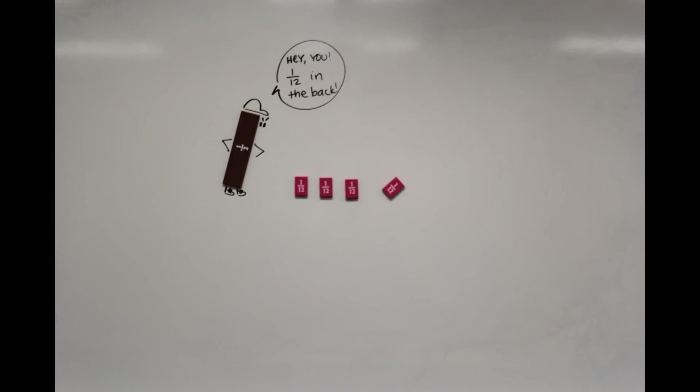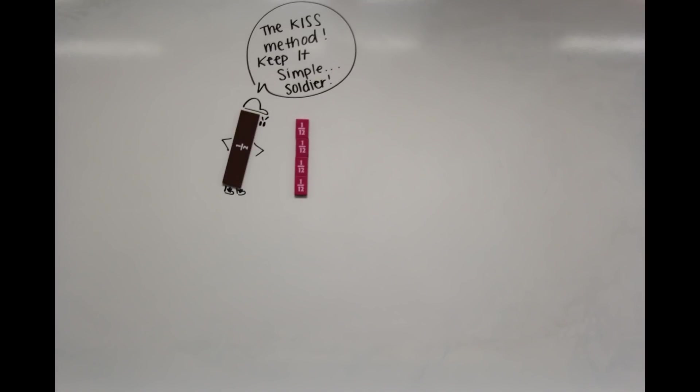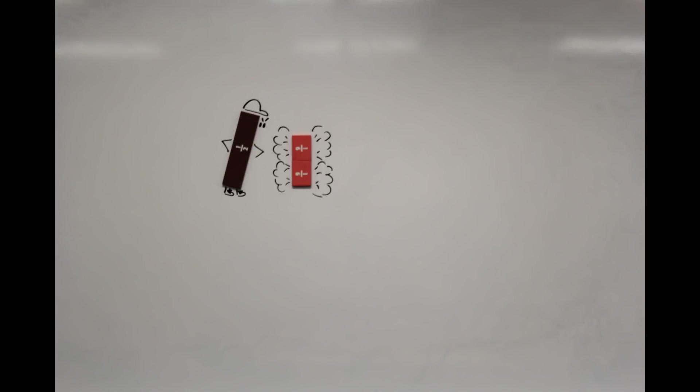Straighten up that line! Hey you 112th in the back, get back here, make a tower. Use the KISS method - don't what, the KISS method? Keep it simple soldier. Not simple enough. That's better, remember keep it simple soldier, now get out of my sight.